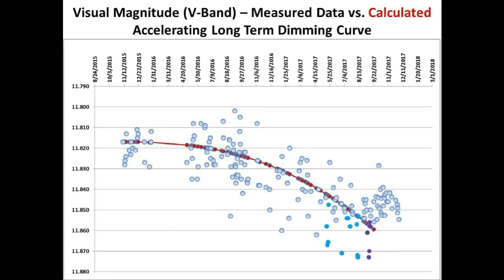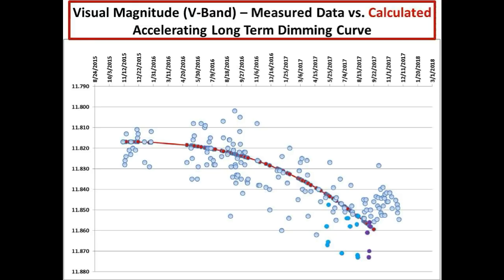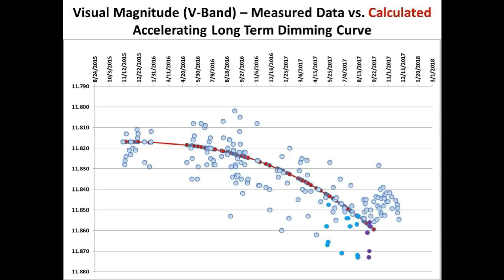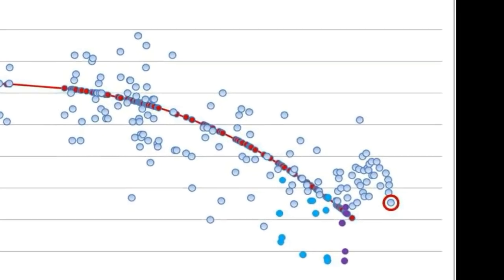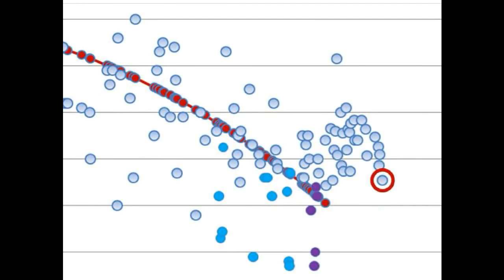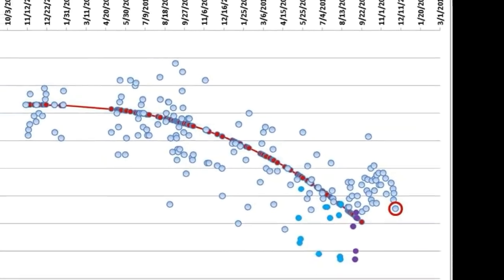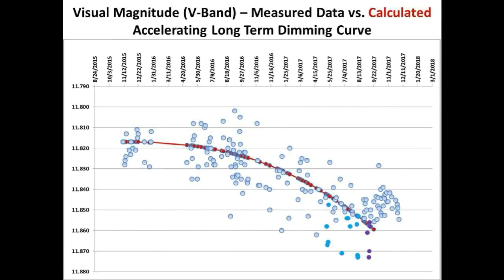This is the scatter plot of the V-band measurements of Tabby Star, which were taken by David Lane over the last 25 months. The measurements were following an accelerating long-term dimming curve until it was recently interrupted by a temporary brightening of Tabby Star, represented by the measurements highlighted in the red circle. The latest V-band measurement taken on November 30th is indicating a continued dimming and getting back down to the level Tabby Star was at prior to the brightening event.